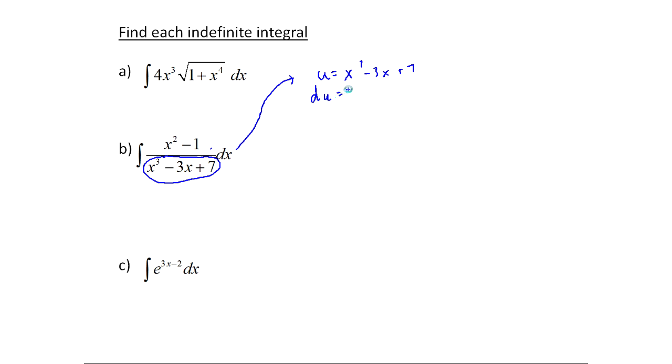I get du equals 3x squared minus 3, and the 7 derivative of that is 0. Okay, and don't forget, this is all times dx. When I go to solve, I get du over 3x squared minus 3 equals dx, and I have to solve, remember, because I've got to replace this dx too. Okay, so now, what do I end up with as my integral when I do all this? I get the integral of x squared minus 1 over u, and then I get dx equals du over 3x squared minus 3.